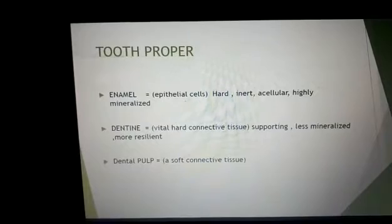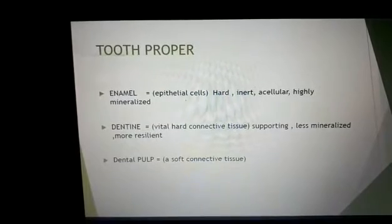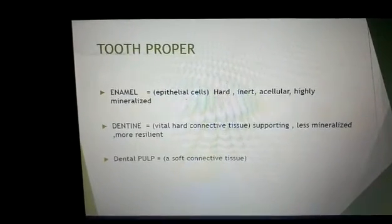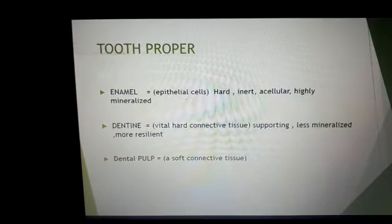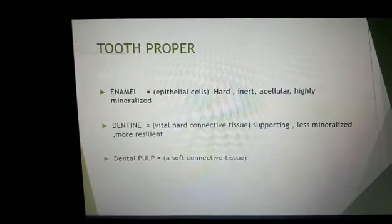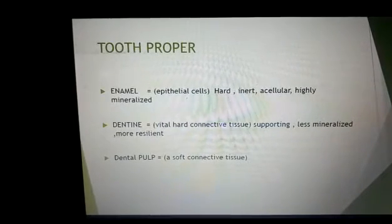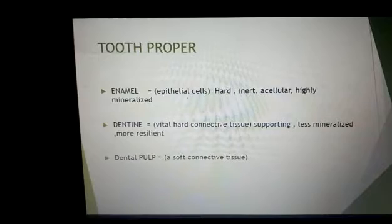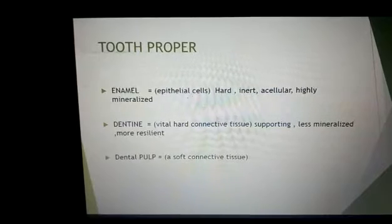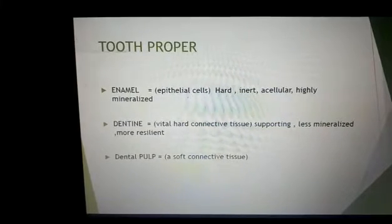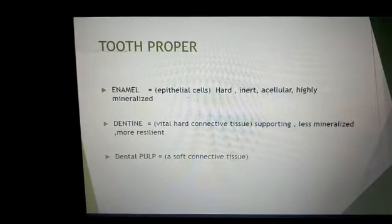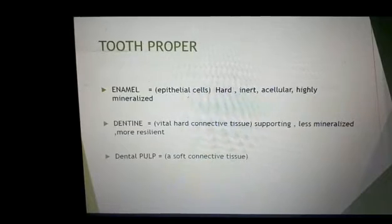The tooth proper can be subdivided into enamel, which is the epithelial cell-derived tissue. It consists of a hard, inert, acellular enamel which is highly mineralized, supported by a less mineralized, more resilient and vital hard connective tissue — dentin — which is formed from and supported by the dental pulp, a soft connective tissue.